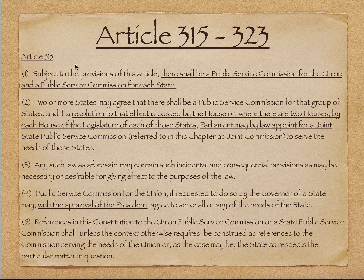Article 315 क्या कहता है? Clause 1 says: subject to the provisions of this article, there shall be a public service commission for the union and a public service commission for each state. यानी Article का Clause 1 clearly कहता है कि union की services के लिए Union Public Service Commission है और states की services के लिए State Public Service Commission है।